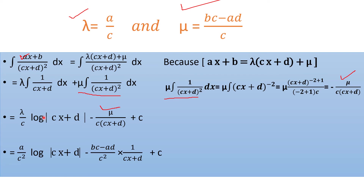We calculated the integration of both items. Now in the last step, replace λ = a/c, so λ/c = a/c². The first term becomes (a/c²) log|cx + d|. Substituting μ = (bc − ad)/c, the second term becomes −(bc − ad) / [c² (cx + d)]. This is the final answer to the question. First way done.